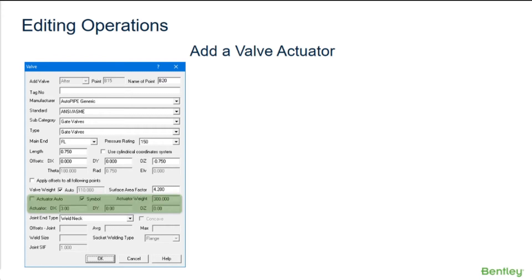When the actuator auto option is checked on, the actuator weight and offsets will be grayed out and set to zero. The valve symbol will be shown as a handwheel at a fixed distance from the valve body. Only the valve weight can be entered and it will be applied at the centerline of the valve.